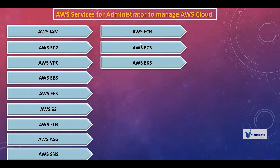Then ECR, ECS, and EKS — these three topics come under containerization technology. You might have heard about Docker and Kubernetes. These three services are important for your career. ECR stands for Elastic Container Registry, ECS stands for Elastic Container Service, and EKS stands for Elastic Kubernetes Service. Docker and Kubernetes are the most widely used containerization tools, and AWS has services for them. These are so important — if you want to get a job in IT, containerization technology is essential.